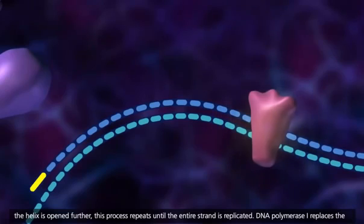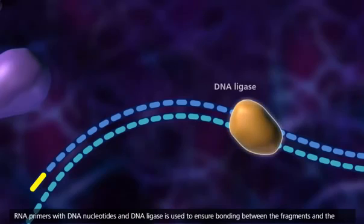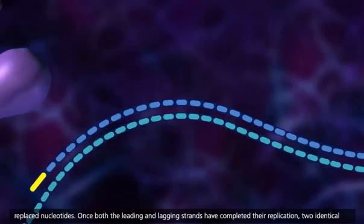DNA polymerase 1 replaces the RNA primers with DNA nucleotides, and DNA ligase is used to ensure bonding between the fragments and the replaced nucleotides.